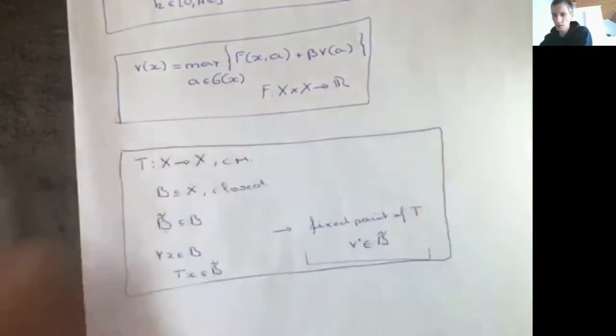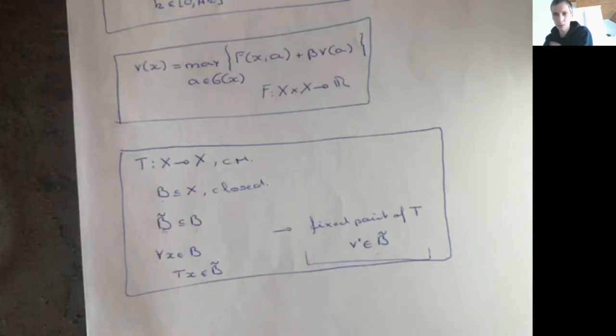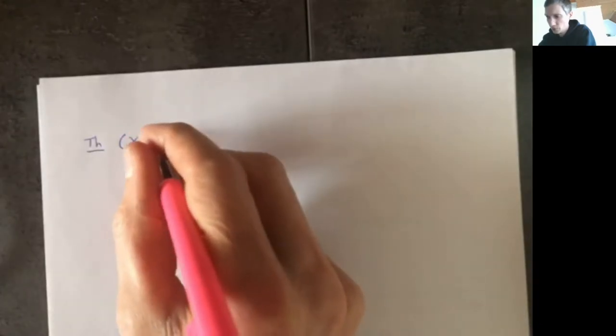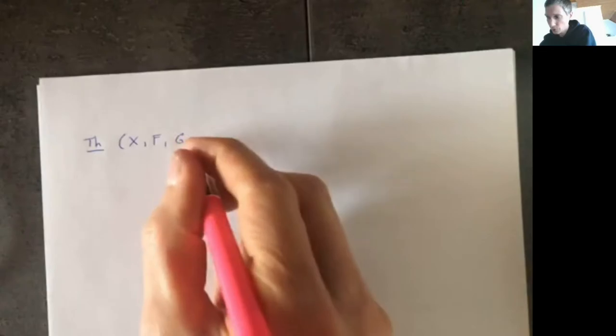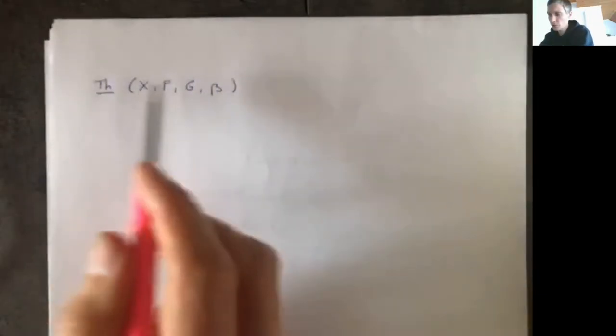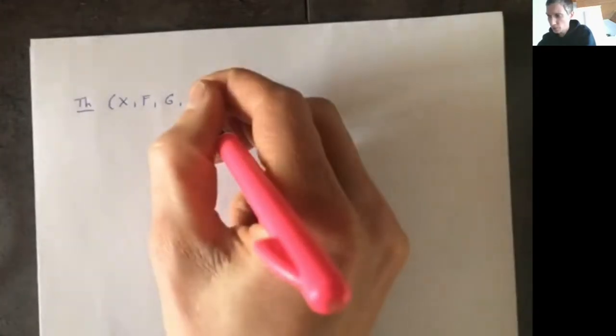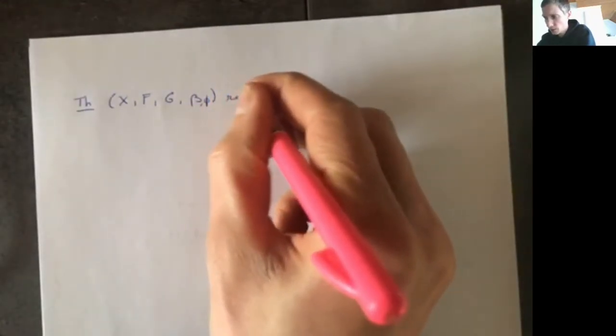This is a lemma that was proven in lecture two or three, and we're going to use it again today. So we're going to start from a regular problem — for the definition of regularity please see the previous lecture — which imposes some continuity conditions on f, g, and the law of motion, and also puts some conditions on how fast f and the phi function can grow.